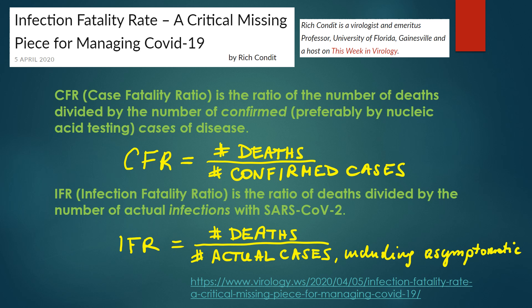IFR, which stands for infection fatality ratio, is the ratio of deaths divided by number of actual infections with SARS-CoV-2. IFR equals number of deaths divided by number of actual cases, including those mild and asymptomatic.